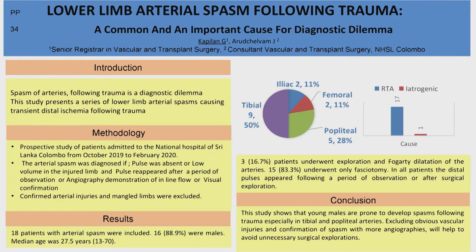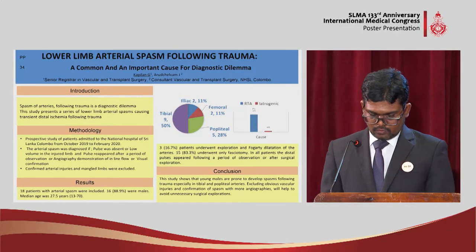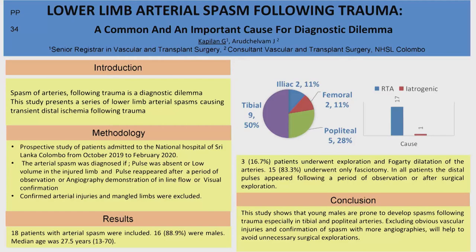In conclusion, this study shows that young males are prone to develop arterial spasms, mainly following trauma to distal vessels like the tibial and popliteal artery. Excluding obvious vascular injury and confirming spasms with angiography — either CT angiogram, digital subtraction angiogram, or catheter-guided angiogram — can help avoid unnecessary explorations to reduce morbidities. We do not currently have access to these facilities, but if the facilities are available, unnecessary explorations can be avoided. Thank you.